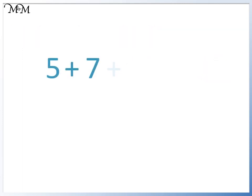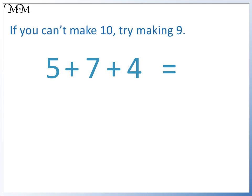Here is 5 plus 7 plus 4. This time there's not a pair of numbers that add to make 10. Another strategy is if you can't make 10, try to make 9.